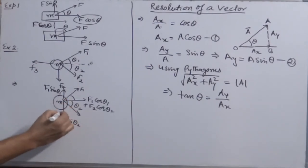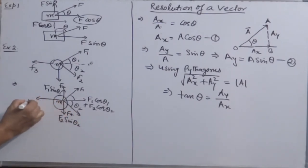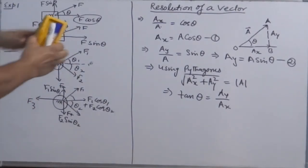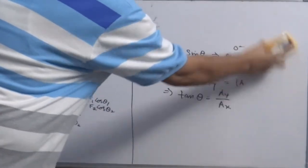F2 sin theta 2 will be down. And there is another force F4 is acting. F3 is acting horizontally. So finally, if we break up all these forces together along X axis and Y axis.